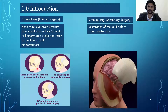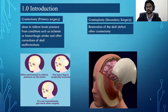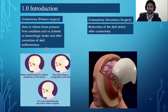Starting off with what exactly is cranioplasty. Cranioplasty is the secondary surgery done to restore the defect in the skull — the hole in the skull. Secondary means that this is done sometime after the primary surgery, which is cranectomy. Cranectomy is the surgery where part of the skull is removed to let the brain expand and swell without being compressed. This is done due to conditions such as stroke, or any deformations on the skull caused by genetic abnormalities or serious accidents.